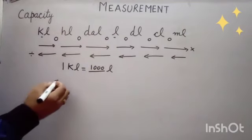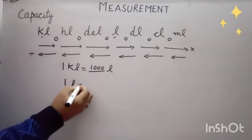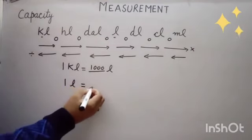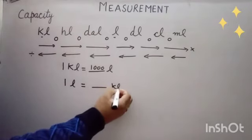And how many kiloliters are there in 1 liter? 1 liter is equal to dash kiloliter.